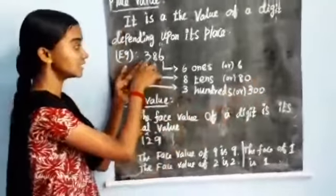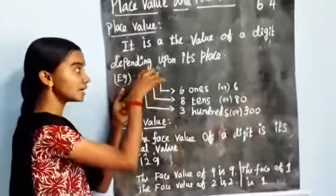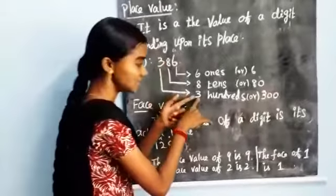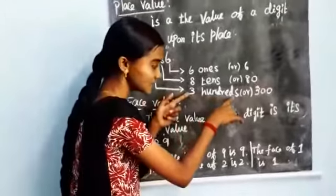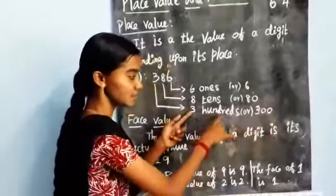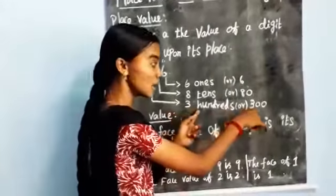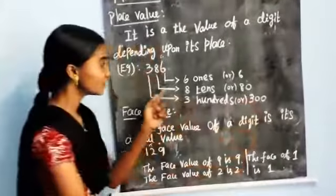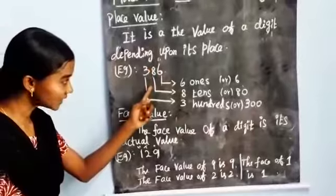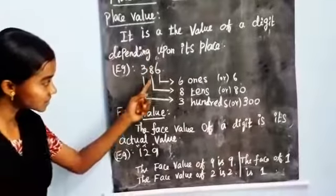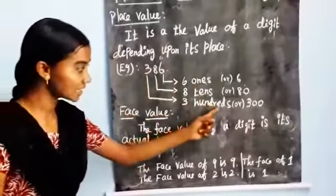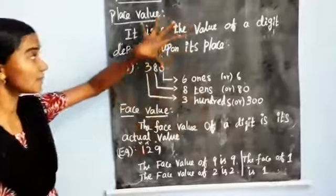You have it right. Then the third digit is in the 100s place. So 3 hundreds, or 300. So: first digit 6 ones, second digit 8 tens, third digit 3 hundreds. That is the place value.